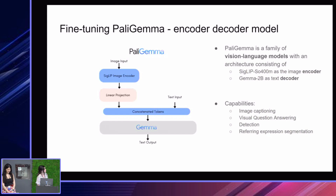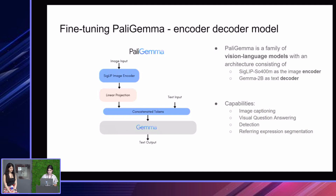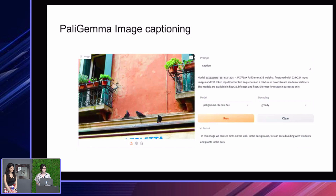Then you pass that through Gemma, a large language model — in this case a 2B model — that can generate text output. Comparing this to CLIP: CLIP is still comparing an image against predefined text, so you fail to generate more open vocabulary text, which essentially limits the applications you could have. In turn, PaliGemma allows for a vast range of capabilities, including image captioning, visual question answering, and detection and referring expression segmentation.